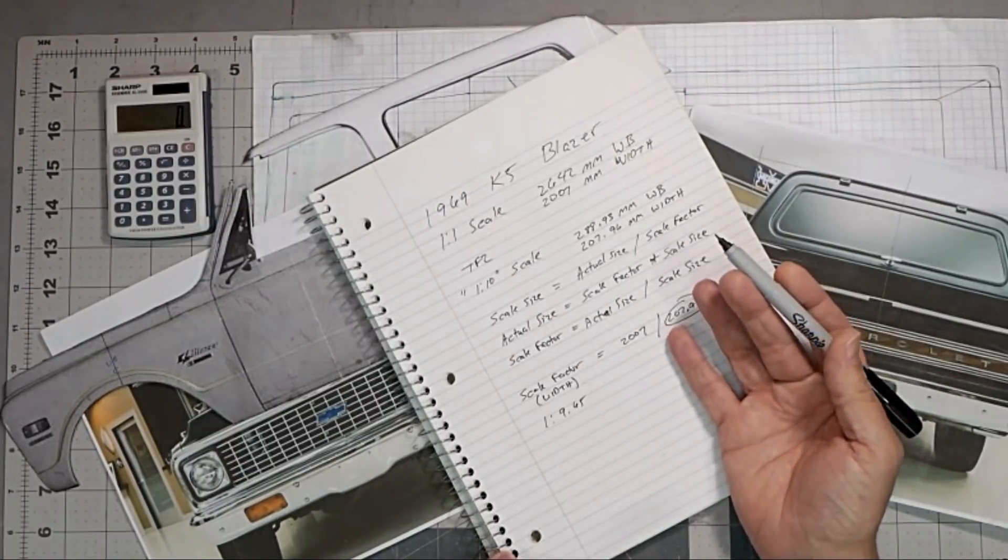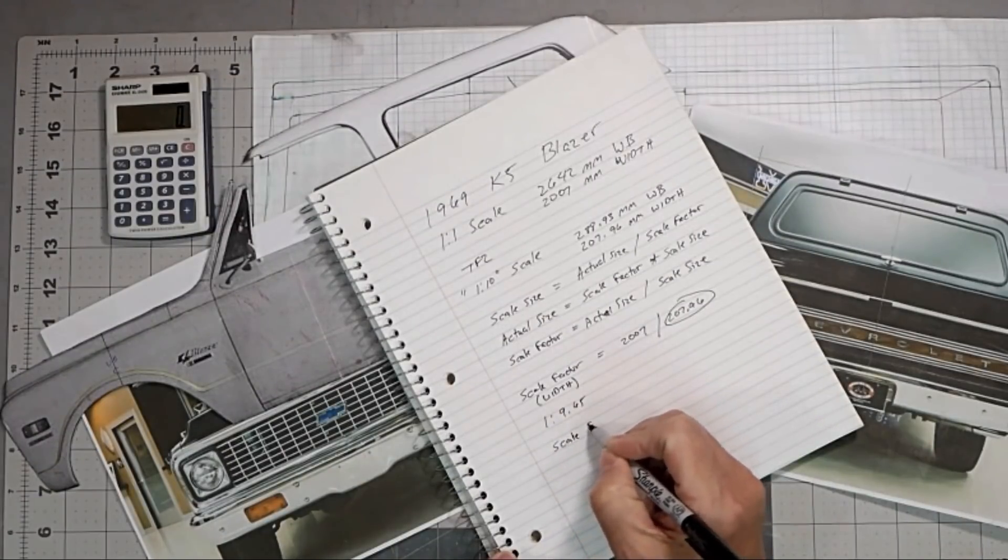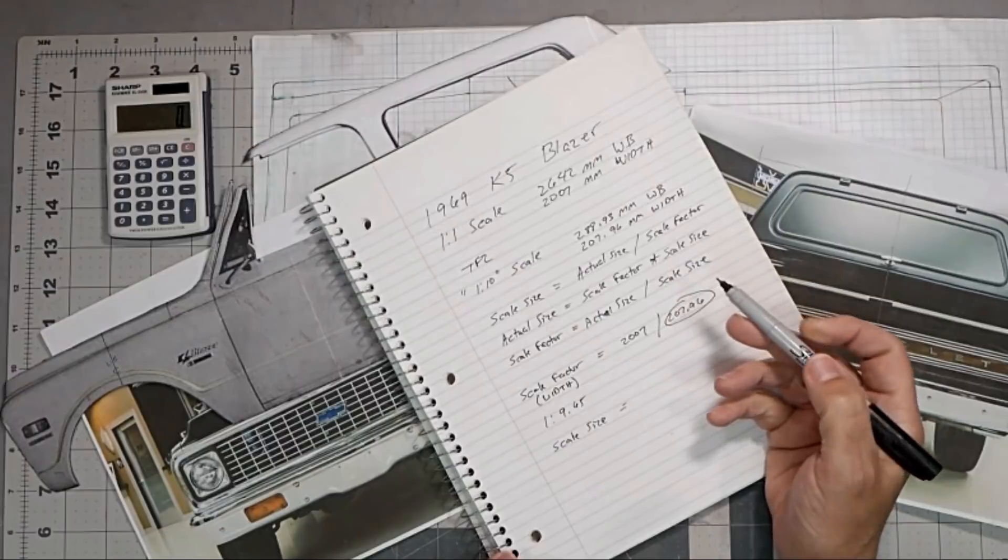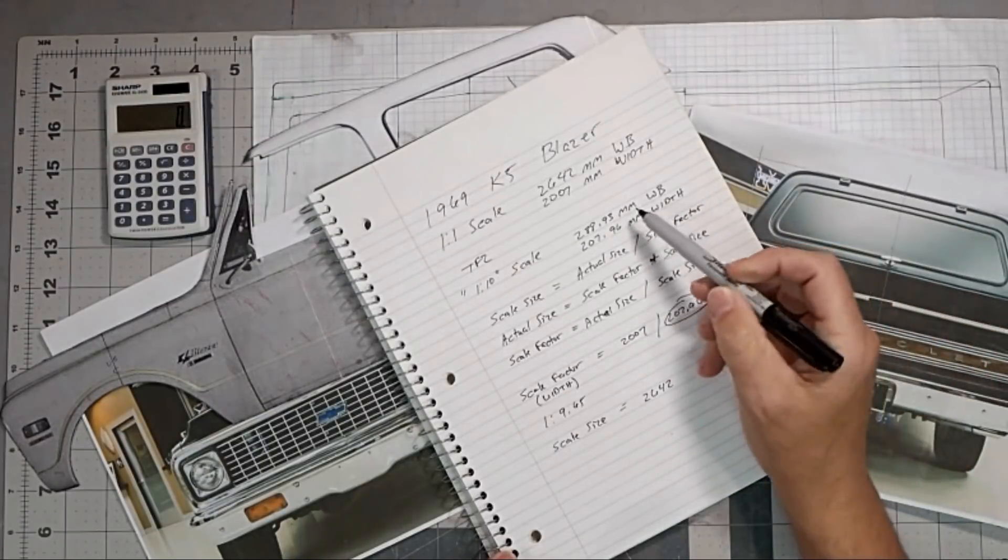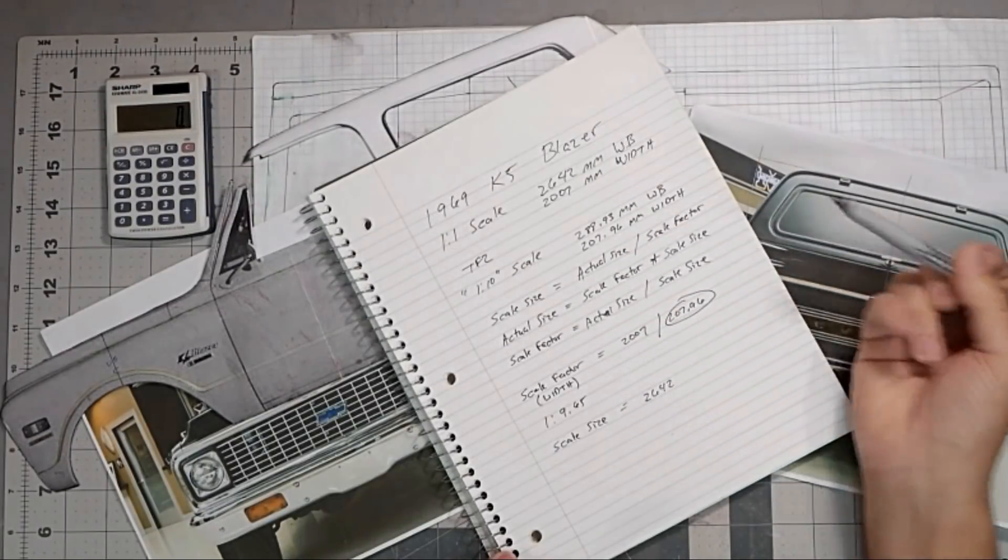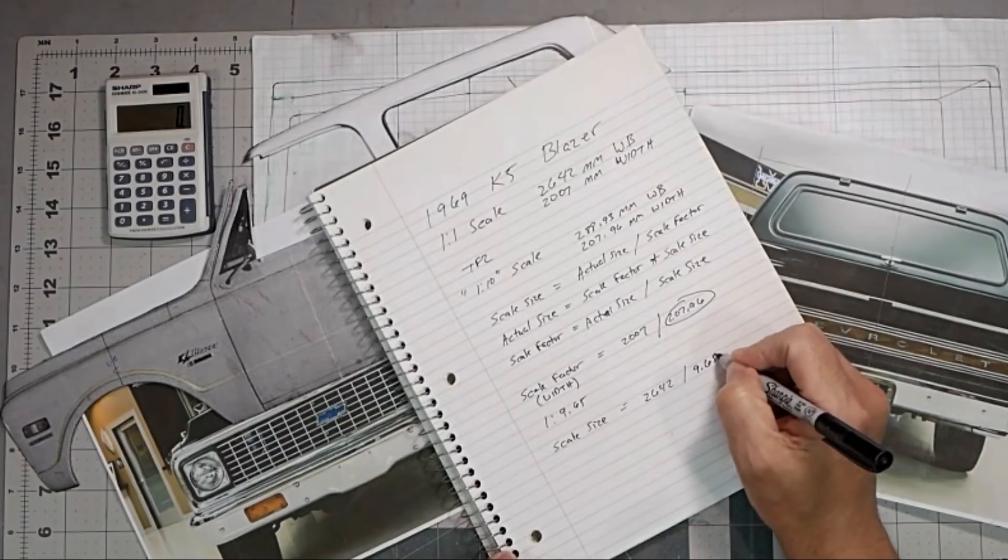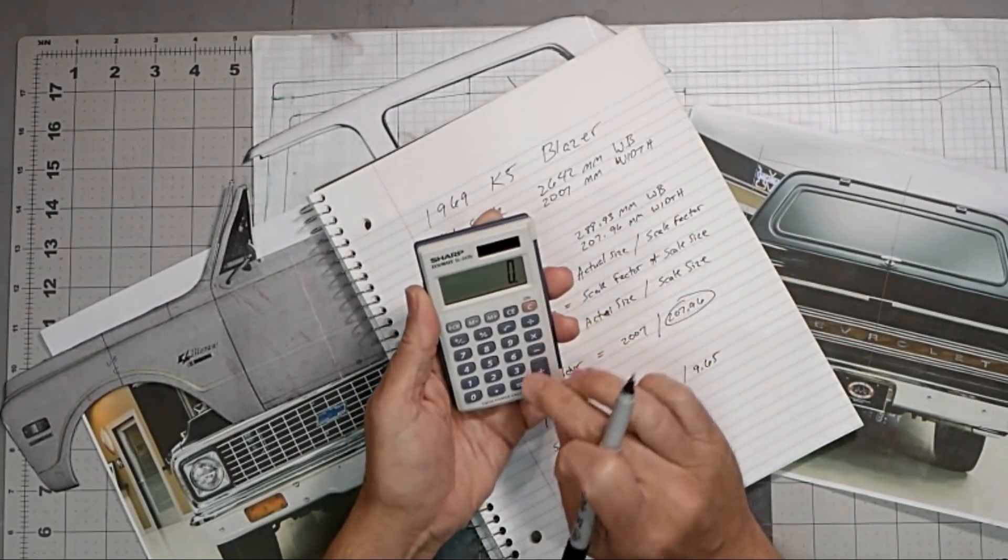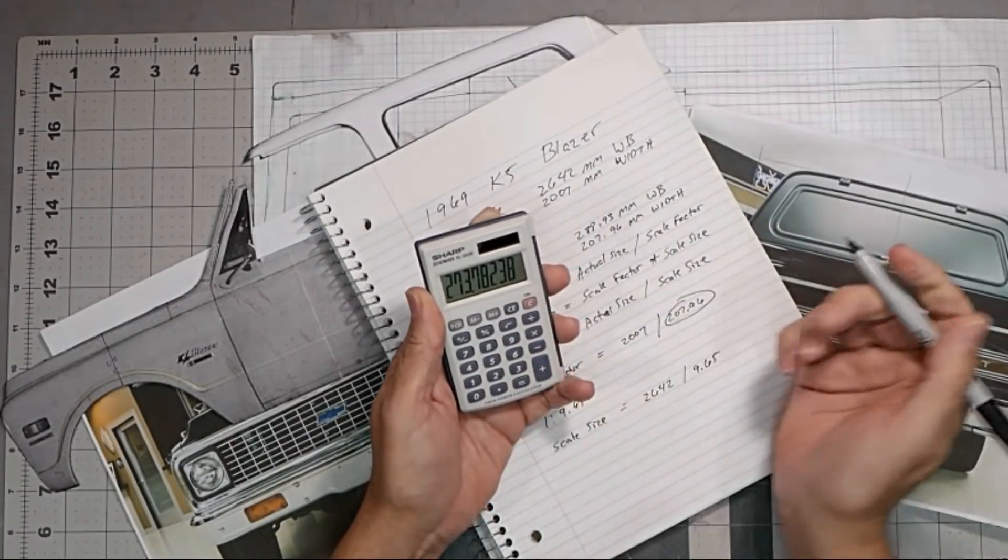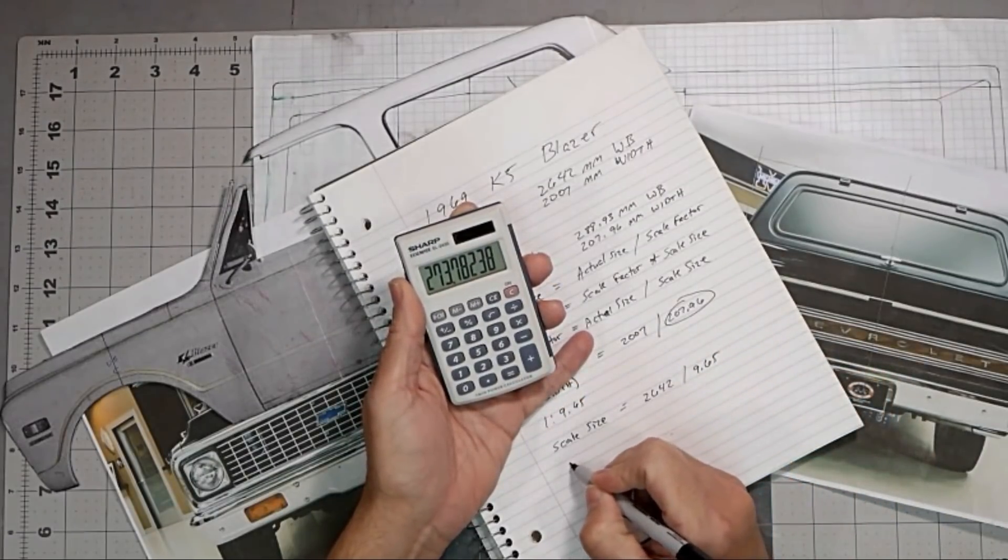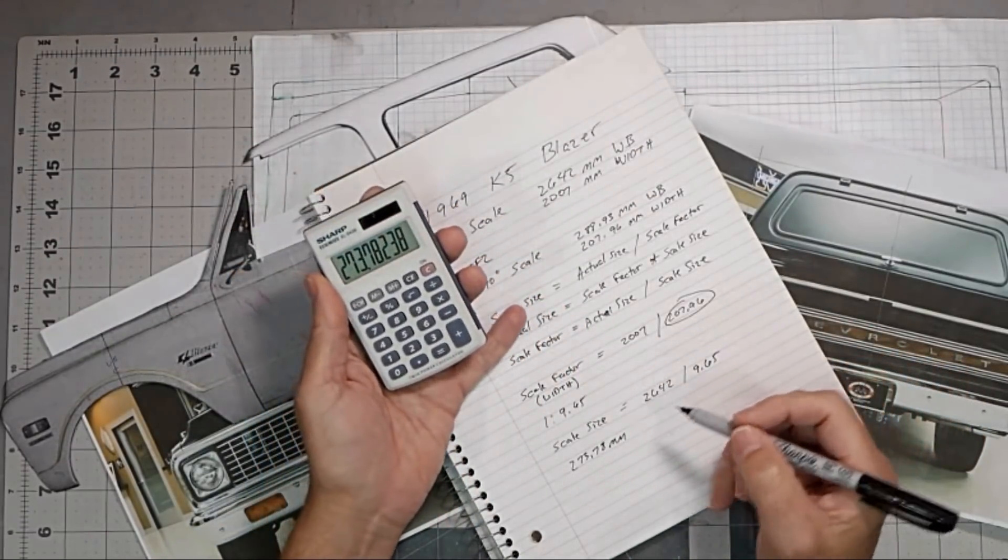So the next thing you want to do is the scale size. So scale size equals the actual size. So we're going to the wheelbase, so that's 2642, divided by the scale factor. So divided by the scale factor here of 9.65. And so you get your calculator again. And 2642 divided by 9.65 gives you 273.78.